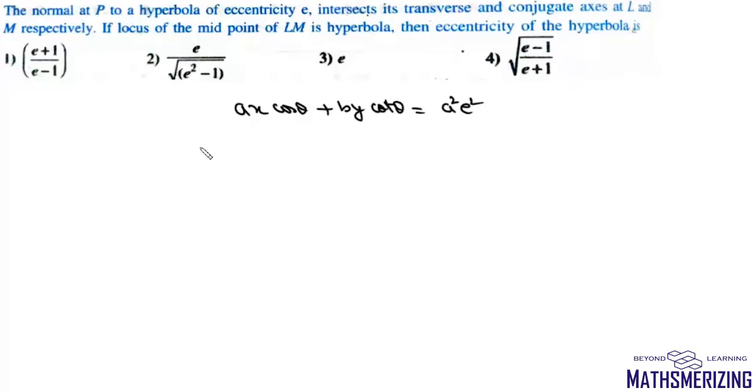Now we will write the intercepts. L will be A E squared secant theta comma 0, and M will be 0 comma A squared E squared tan theta upon B.